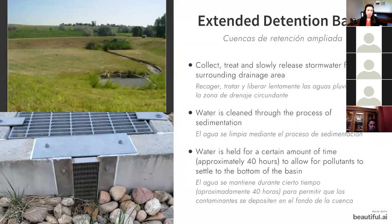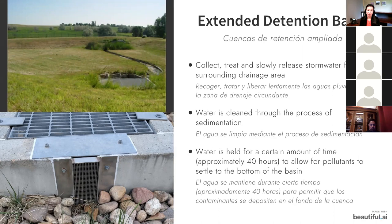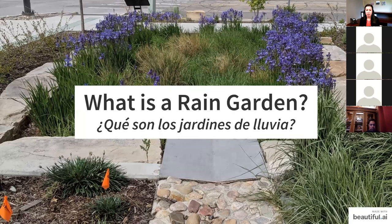The most common type of stormwater infrastructure in Colorado is called an extended detention basin. This uses the process of sedimentation, where water is held for approximately 40 hours to allow pollutants to settle to the bottom of the basin. That is our next class, so sign up for the October presentation.